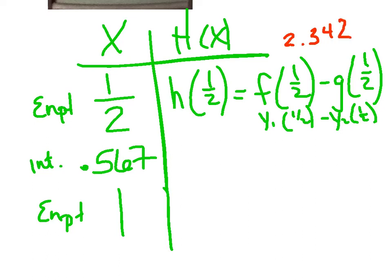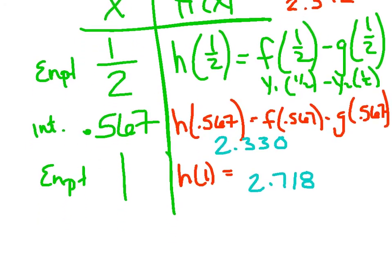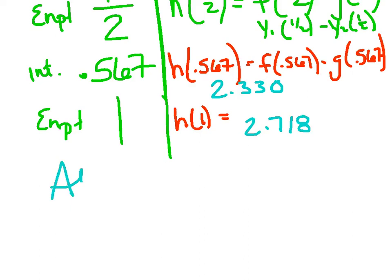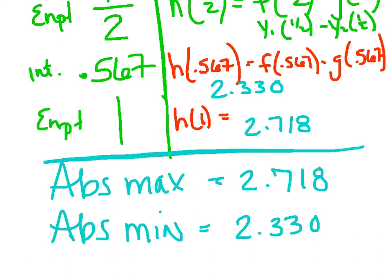And then I'm going to do the same thing for each of these. h(0.567), which is really f(0.567) - g(0.567). Obviously, you get the idea. And the same thing for h(1). And then my goal is just to compare those answers. And I've got 2.330 and 2.718. Now lastly, just make sure you actually answered the question. They asked for an absolute max and an absolute min. Now notice they didn't say where. They actually want the values. So I would say my absolute max is 2.718. And my absolute min is 2.330. And that actually answers our question.